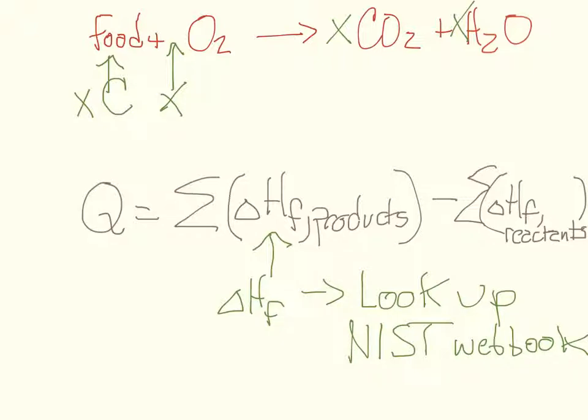And then to figure out what happens in an actual reaction, you put them together where you have the sum of the products minus the sum of the reactants. And just as a reminder, the products are the things that are on this side, so in this case, CO2 and water, and the reactants are the things on this side, in this case, the food and the oxygen. Okay, let's do a specific example on the next page.